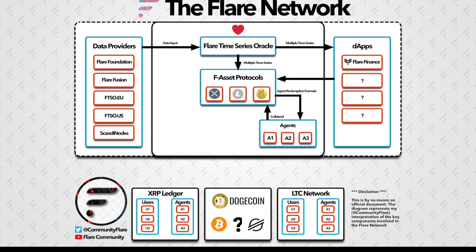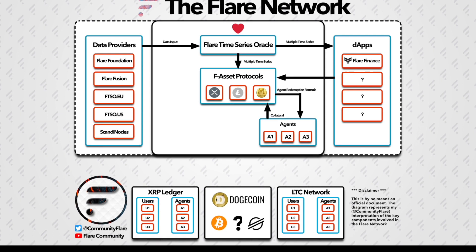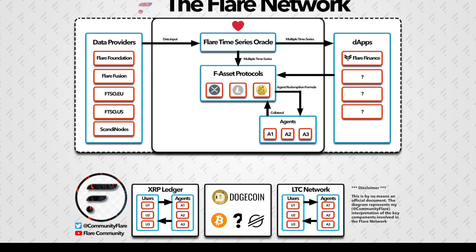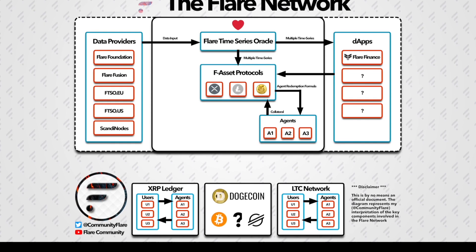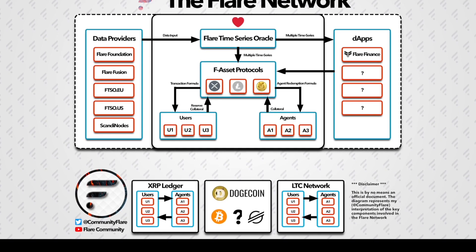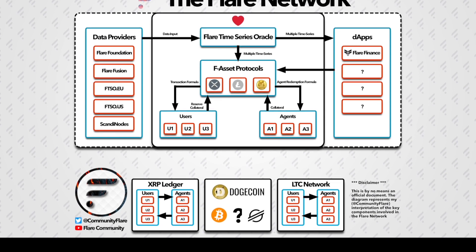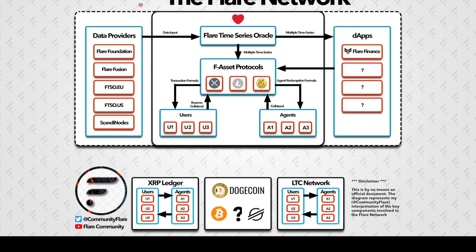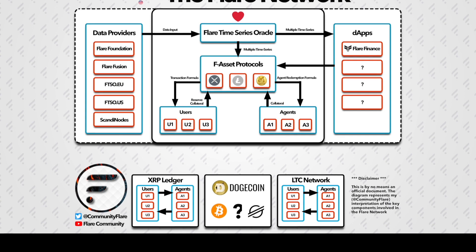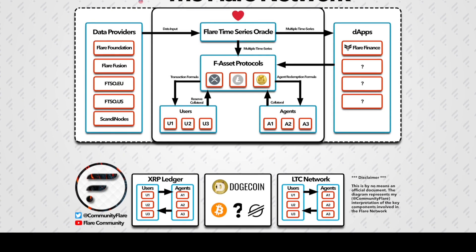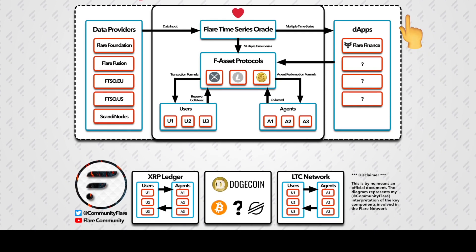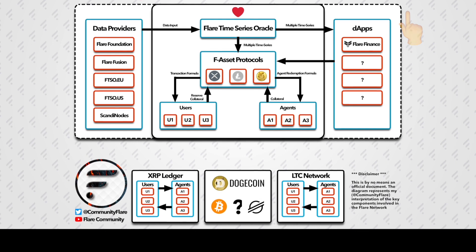These networks also have users in addition to agents. The agents will be responsible for receiving the assets from the user to be converted into an F-asset equivalent. To complete the cycle, the agents on the external networks will also be responsible for returning their assets if they were to exchange the F-asset back into its original form. A detailed video explaining the creation and redemption of F-assets can be found in the link above.